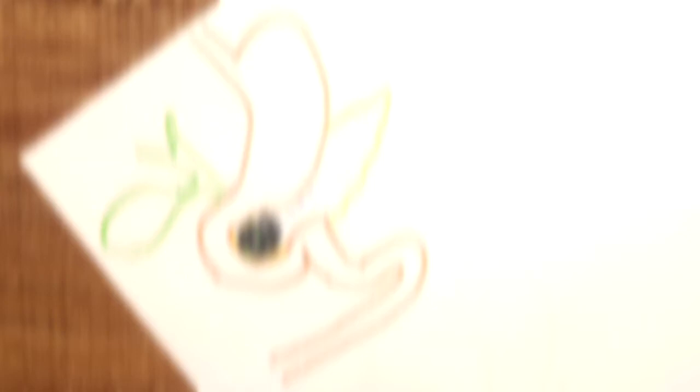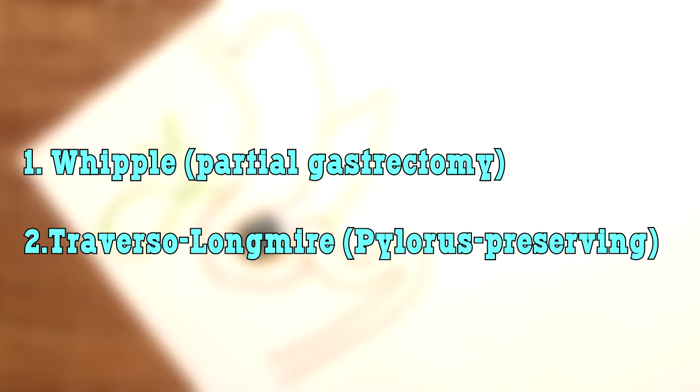Now let's pretend there is a resectable mass in the head of the pancreas. In this case we have two radical operative options, to be more precise the two variations of a single procedure: pancreaticoduodenectomy.